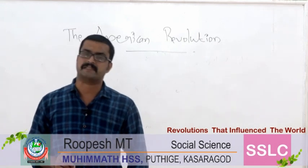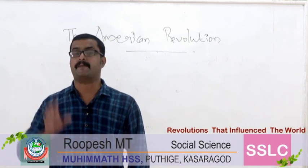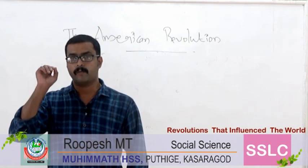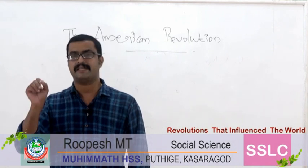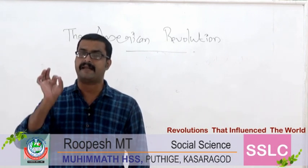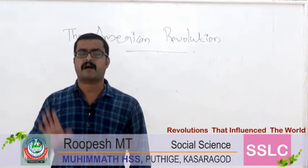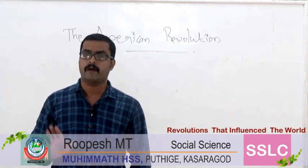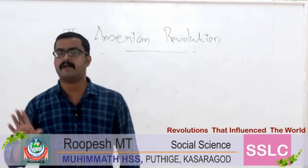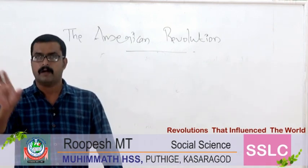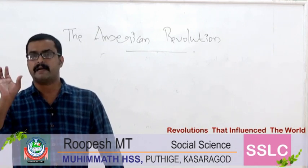Not only the economic policies of Britain, but also a group of thinkers inspired American people to raise the slogan against Britain. The first was John Locke, and the second was Thomas Paine. John Locke used the term 'fundamental rights.' John Locke believed each man is unique and has his own fundamental rights. Any government cannot control the fundamental rights of people. That statement and ideology inspired American people against Britain.